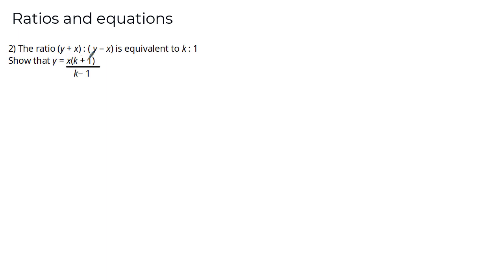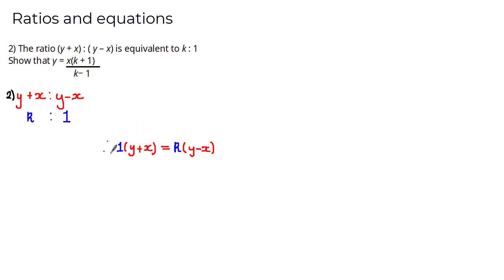Welcome back. Given that (y + x) : (y − x) = k : 1, using cross multiplication we derive: 1 × (y + x) = k × (y − x). Expanding the brackets gives y + x = ky − kx. We now need to make y the subject by grouping like terms — subtracting y from both sides and adding kx to both sides gives x + kx = ky − y.